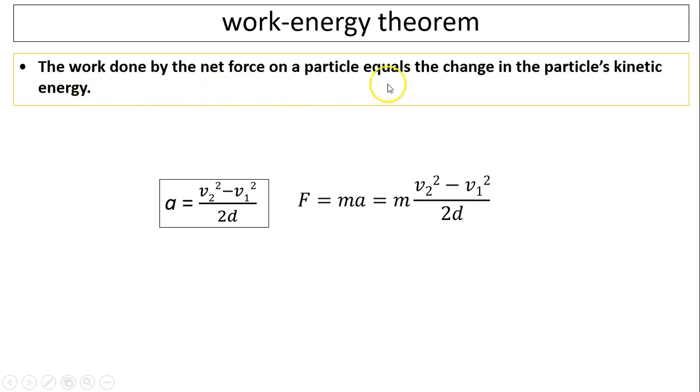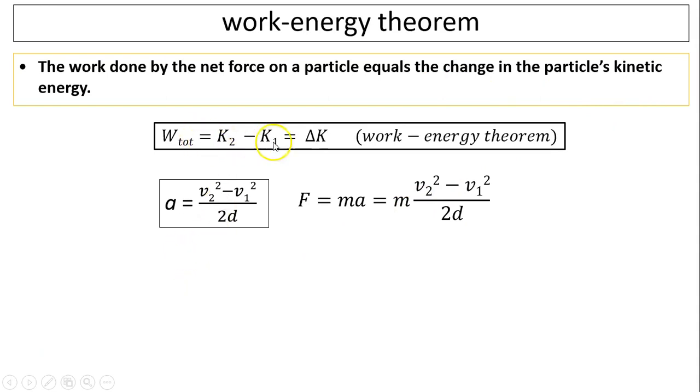So the work done by net force on a particle equals the change in particle's kinetic energy. So this is the equation: W_net = K2 - K1 = ΔK. K2 means kinetic energy after you do the work. K1 is the kinetic energy before the work is done. So the total work done equals to change in K. K is the symbol for kinetic energy.